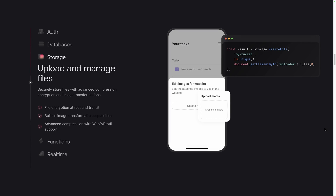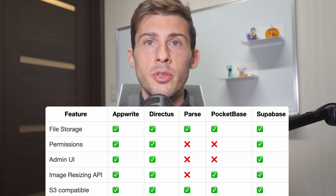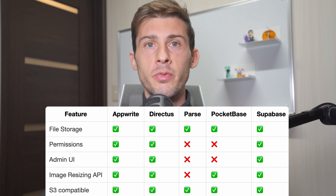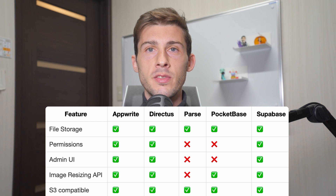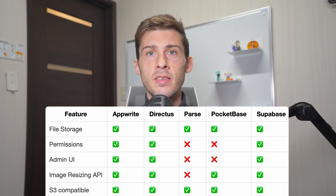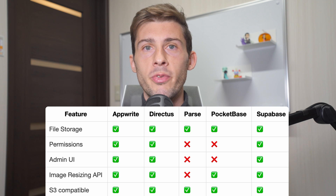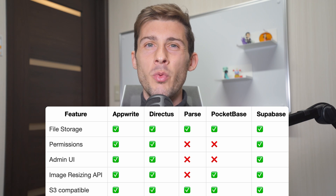File Storage. File storage is an important feature that you will need in most apps. It allows you to store files like images, videos, and documents. All contenders support file storage with useful features like permissions, admin UI, and image resizing API. They all support S3-compatible storage, meaning you can use any S3-compatible provider like AWS, Cloudflare R2, or MinIO to host files on a separate server — useful for scaling and cost optimization. Parse and Pocketbase are the weakest in this category, as they don't have an admin UI or permissions for files, so I wouldn't recommend them if your project relies heavily on complex and secure file features.